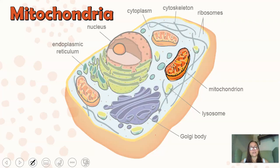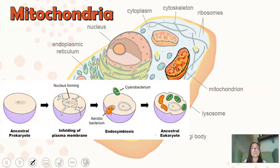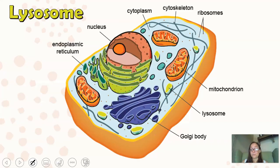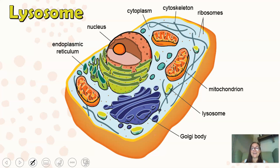The mitochondria is often called the powerhouse of the cell — what that really means is the mitochondria takes our macromolecules and, through aerobic respiration, produces ATP from them. In another video we'll discuss the evolution of mitochondria and chloroplasts, but briefly, they evolved from prokaryotes through a process called endosymbiosis.